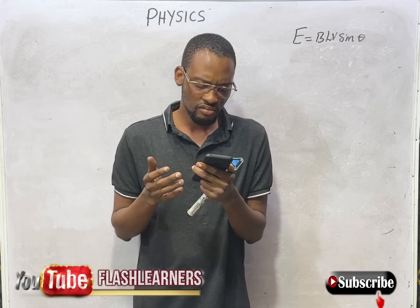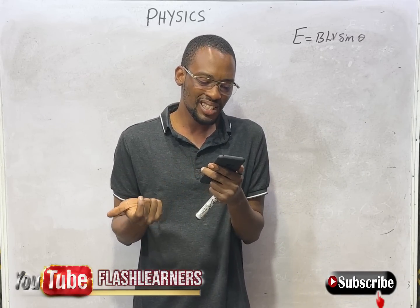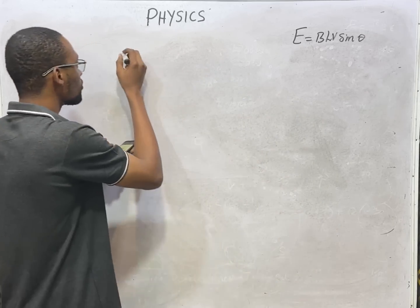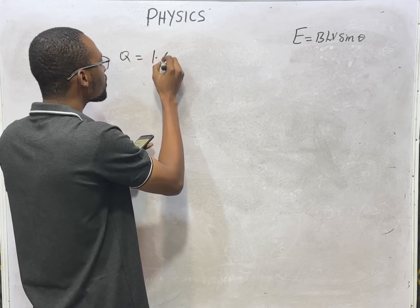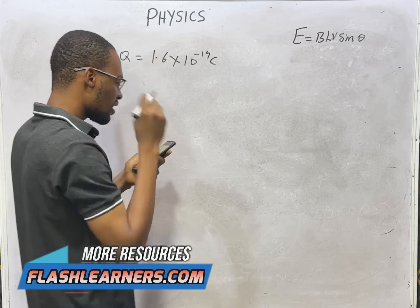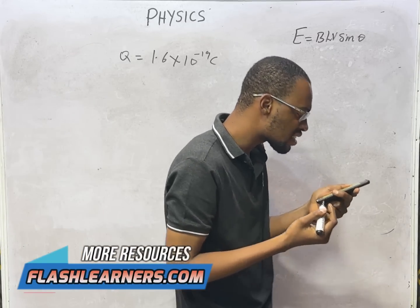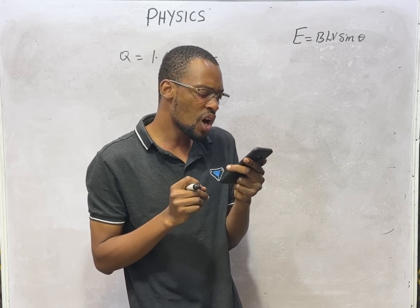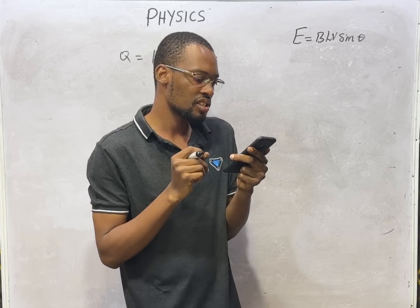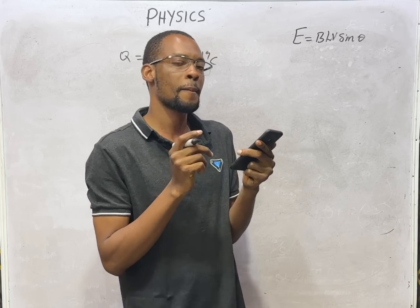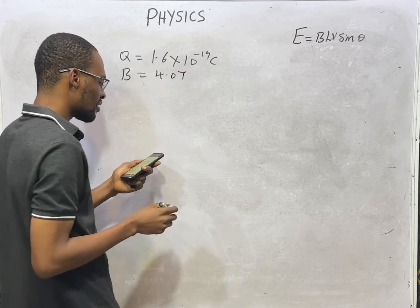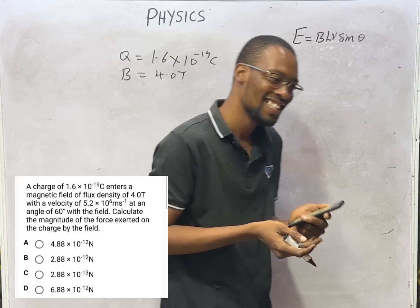Now questions like this are pretty easy. All you basically need is the formula. It says a charge Q = 1.6 × 10^-19 coulombs enters a magnetic field of flux density 4.0 Tesla.